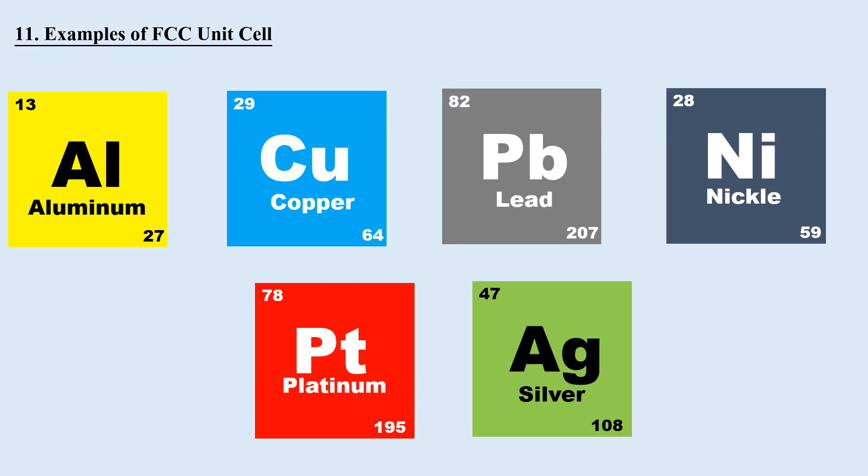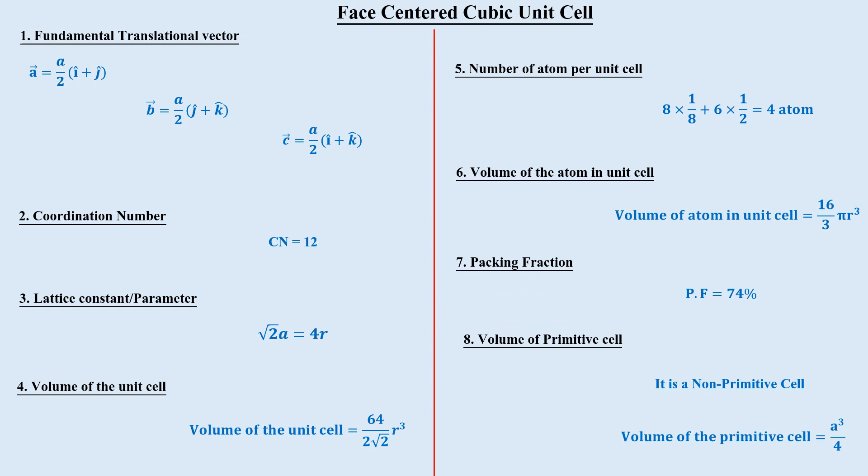Examples of face-centered cubic crystals include aluminum, copper, lead, nickel, platinum, and silver. In this video, we learned about the third type of cubic crystal — FCC, the face-centered cubic unit cell.